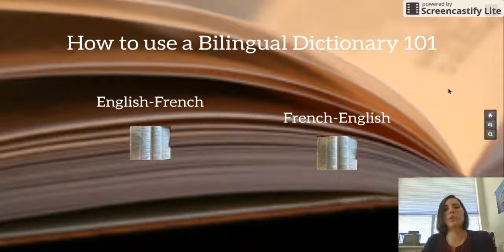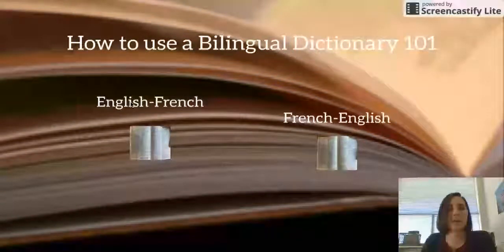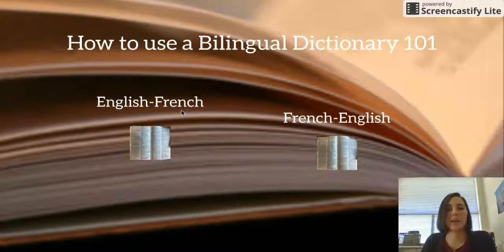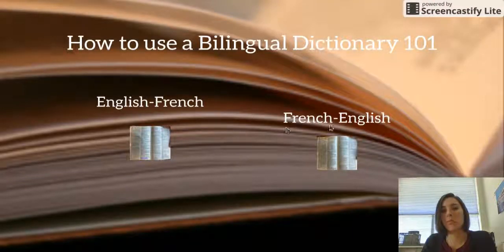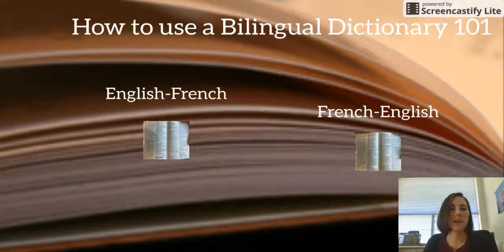For a bilingual dictionary, you'll have two different sides. You'll have one side where you look up the English word and you find the French, or the other side where you look up the French word and find the English. We're going to start off with the English-to-French side.